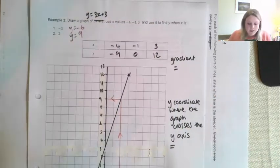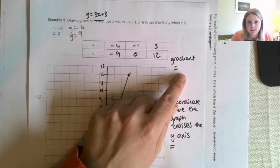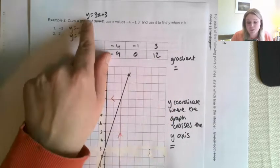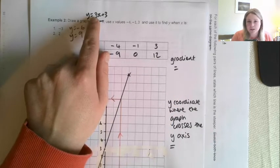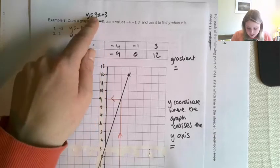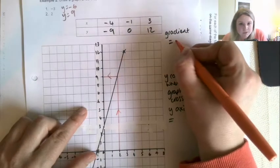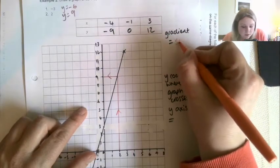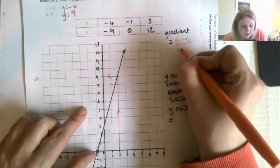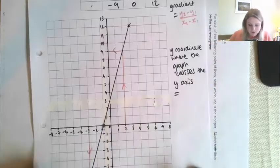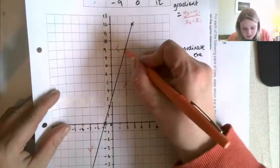Now the next thing we had to do was to calculate the gradient. Now we know from looking at this that our gradient is going to end up being 3. But let's figure it out anyway. So do you remember the equation for getting the gradient? The gradient equals y2 minus y1 over x2 minus x1. See if I use these points here.